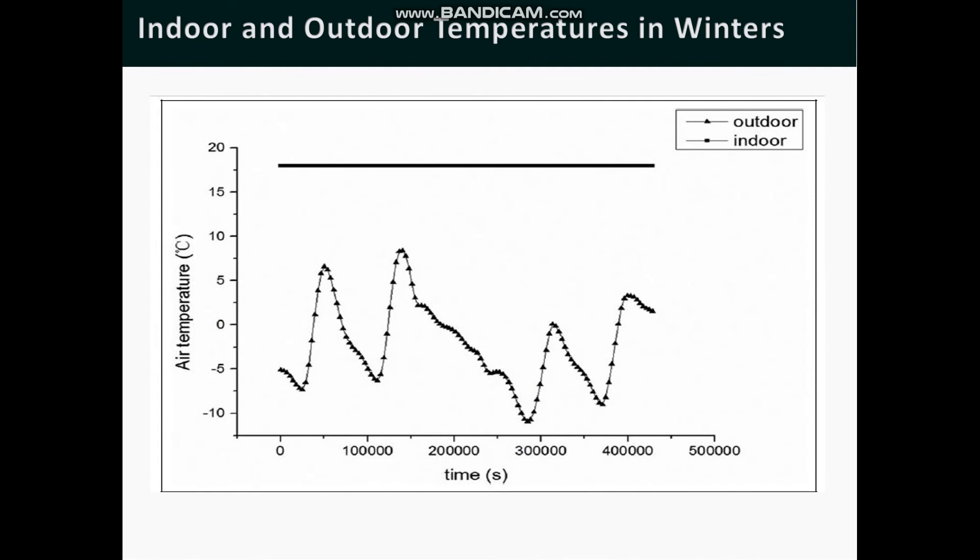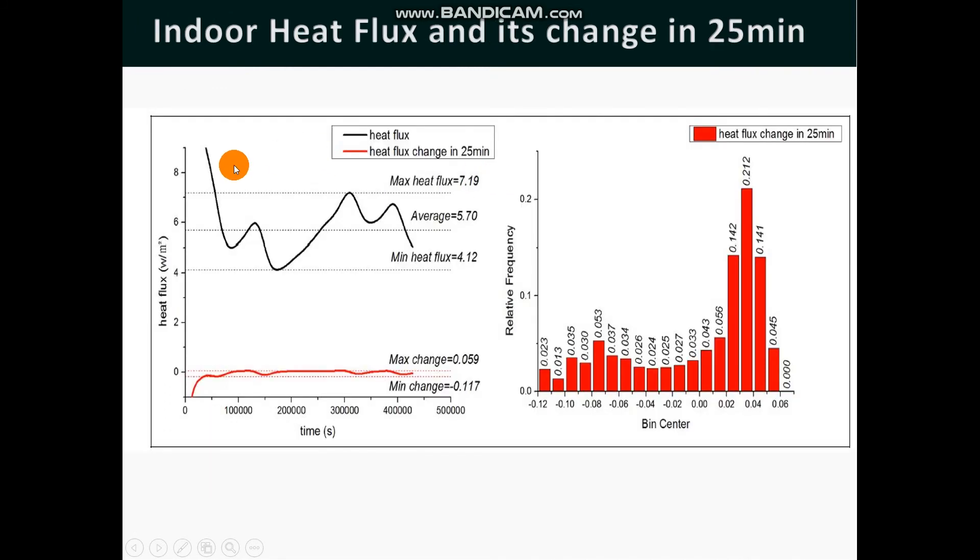If we have a look at the temperatures recorded by the authors of the paper, they have measured the indoor and outdoor temperatures in winters and here is the graph of their measurements. As we see the temperature was varying outdoors while the temperature was kept constant indoors. Similarly, graph was plotted for the heat flux which was observed through the wall. Here at the bottom we see the maximum change and the minimum change and this shows that the change in the flux is quite less.